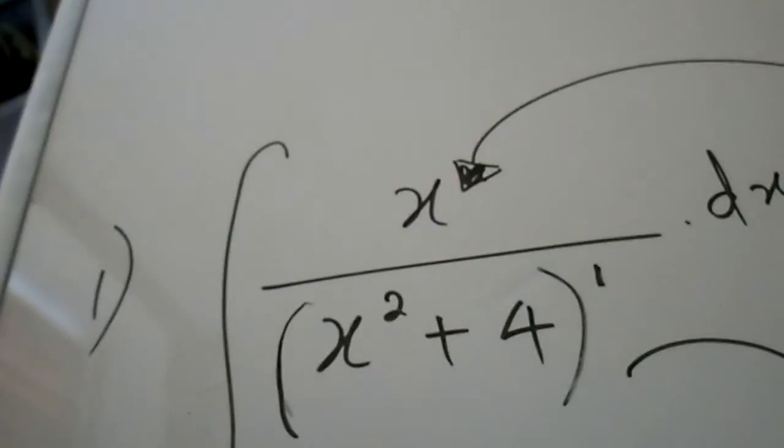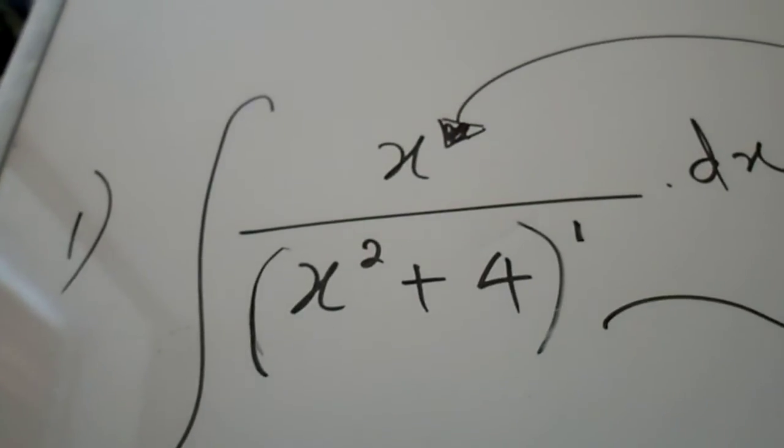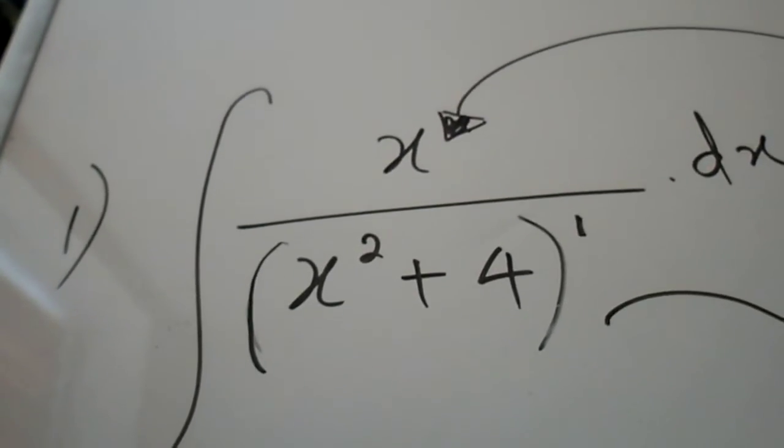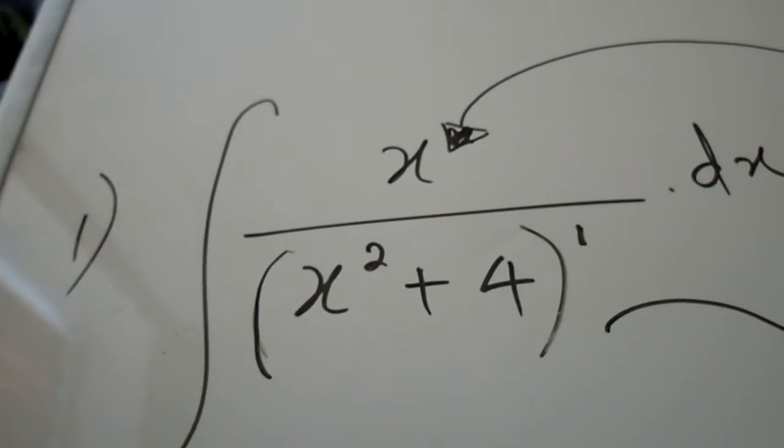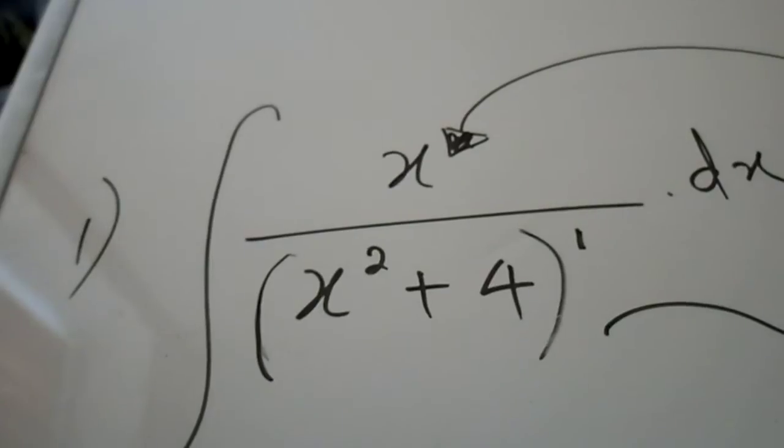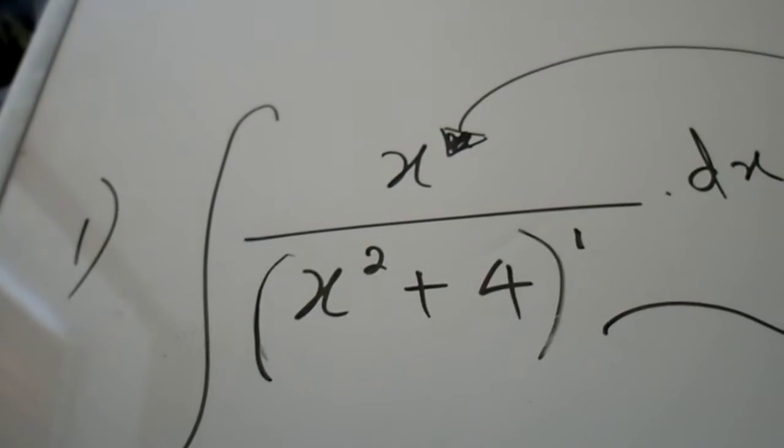So the first question is x over x squared plus 4. Now with the recognition method most of the time you'd find that the functions are being multiplied or divided or the same.